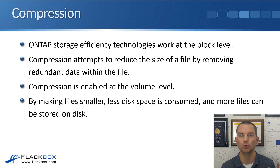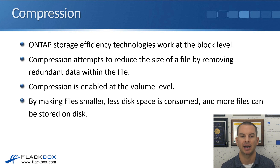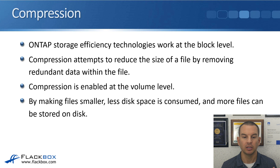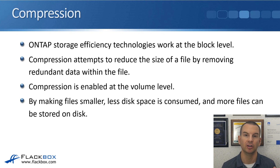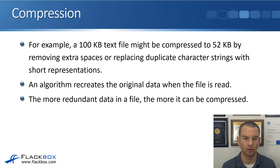Moving on to compression. ONTAP storage efficiency technologies work at the block level — deduplication, compression, and compaction are all block-level. Compression attempts to reduce the size of a file by removing redundant data within the file. Compression is always enabled at the volume level. By making files smaller, less disk space is consumed and more files can be stored on disk.